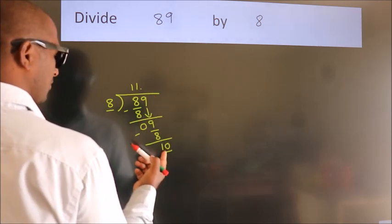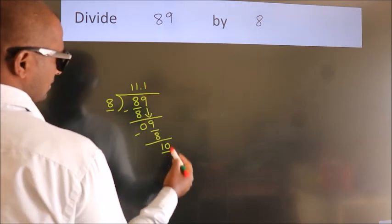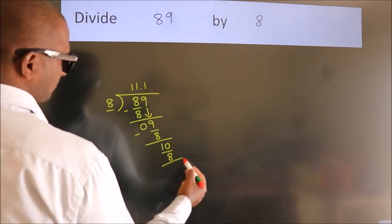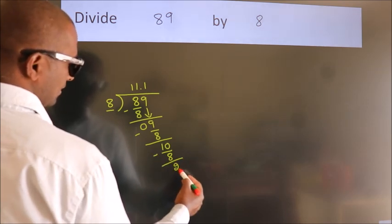A number close to 10 in 8 table is 8 once, 8. Now we subtract. We get 2.